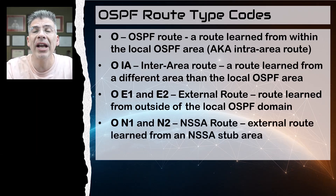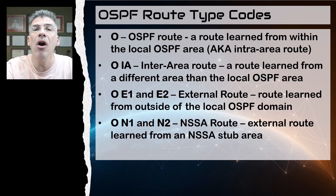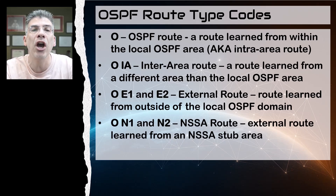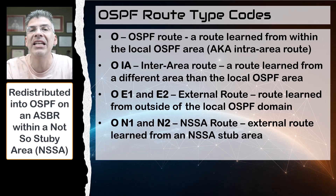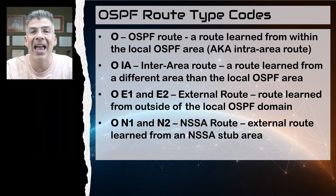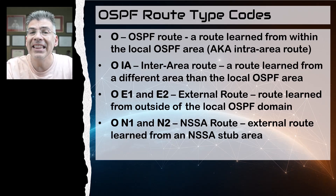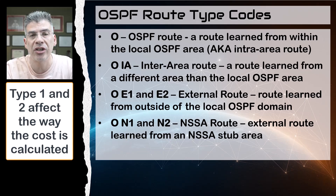Then we have two more external routes: the ON1 and ON2 routes. These are also external routes, but they are injected into the OSPF domain on an ASBR that exists within a not-so-stubby area, or NSSA. There are two types of N routes, types 1 and 2, and again the types have to do with how the metric to each destination is measured.